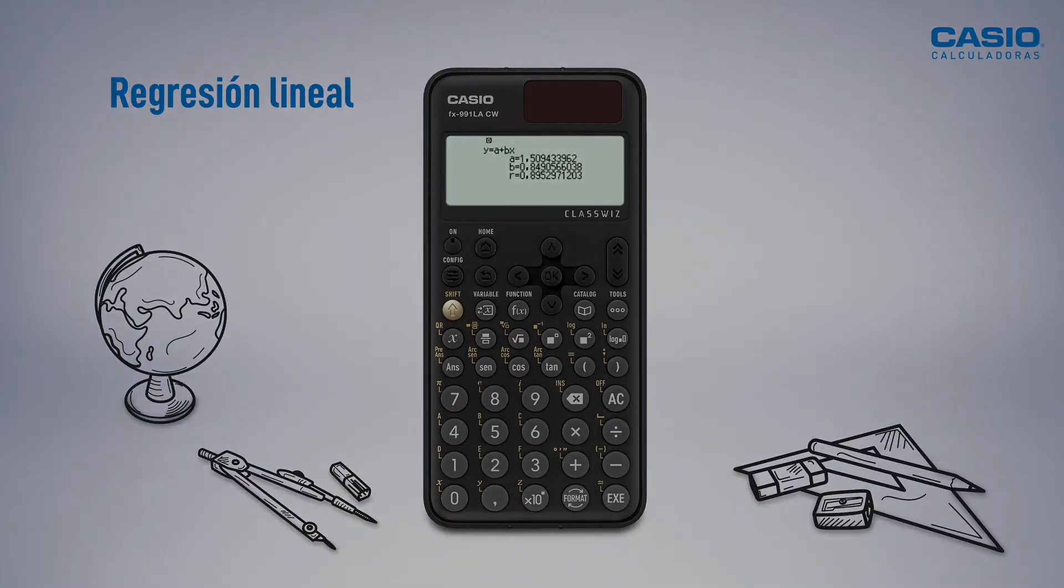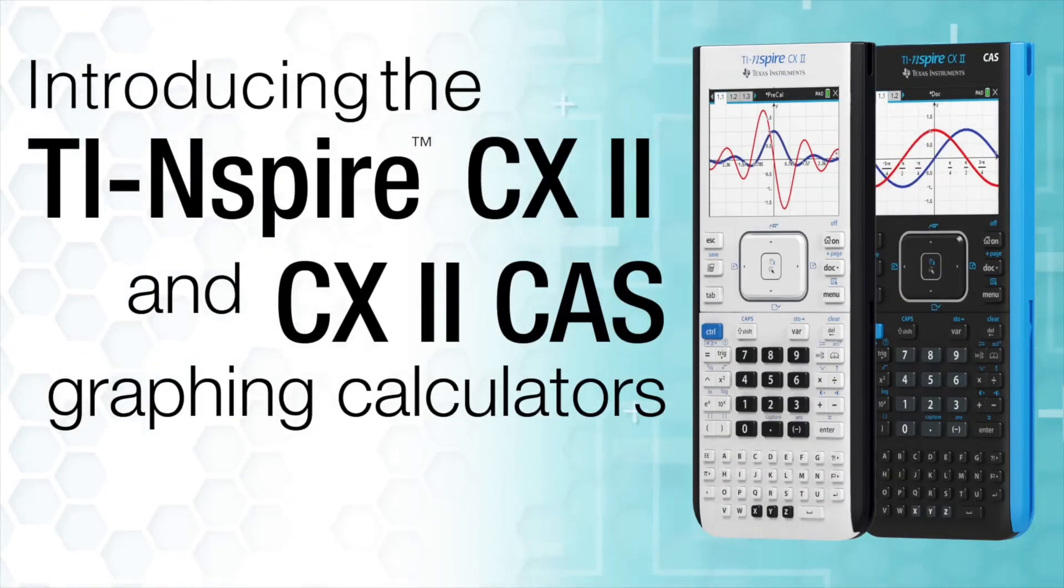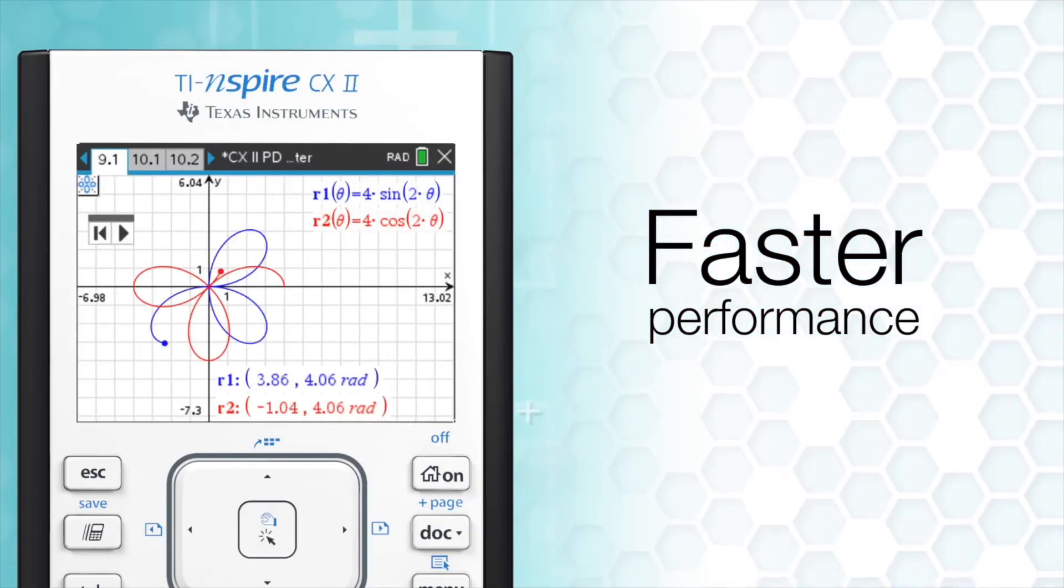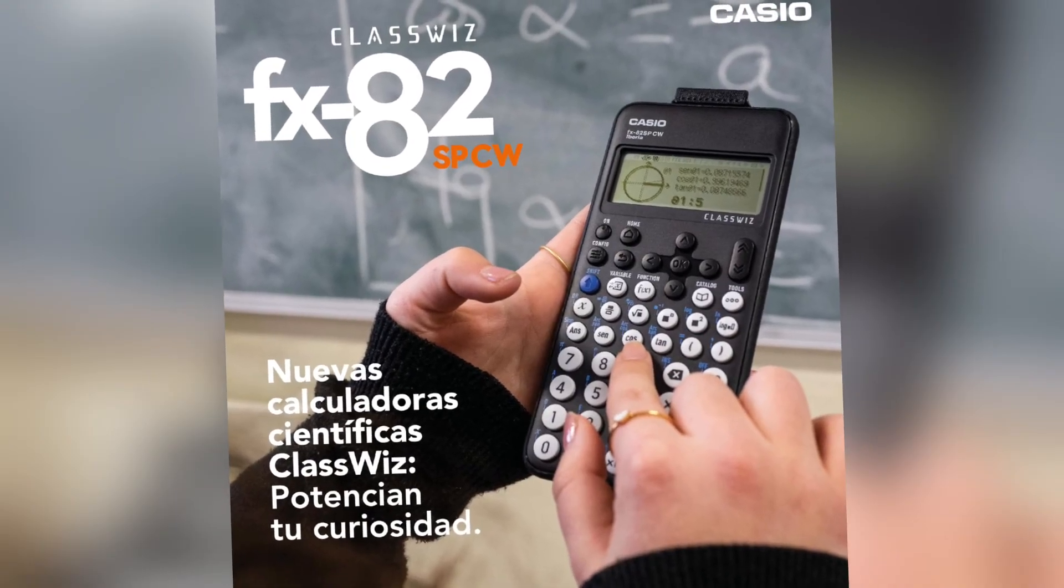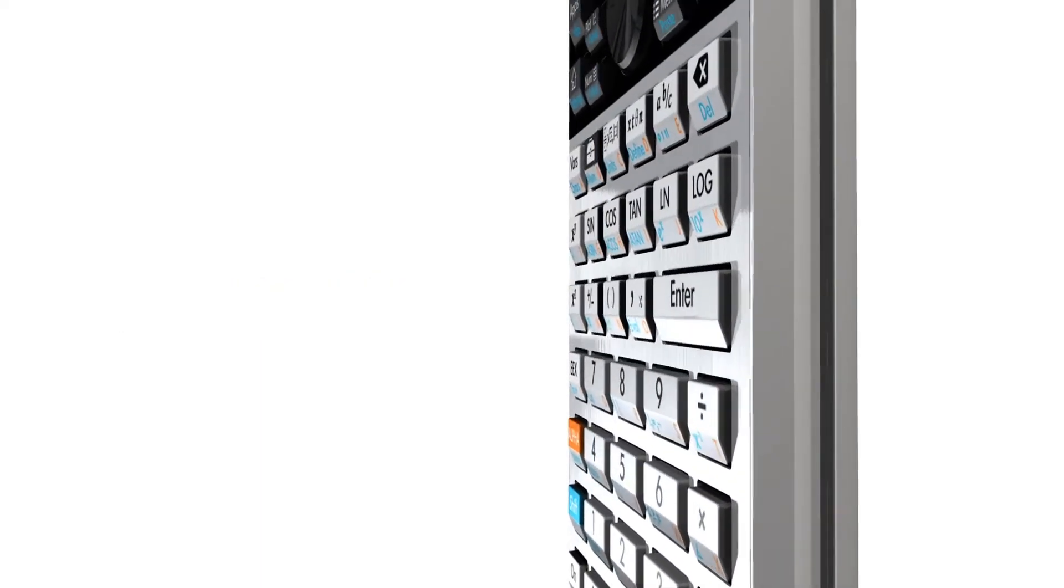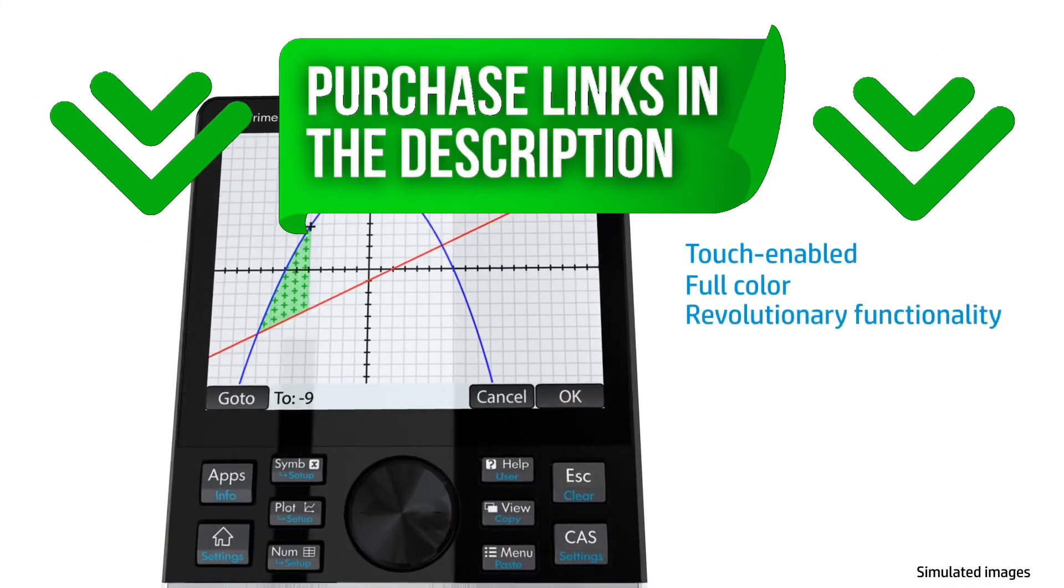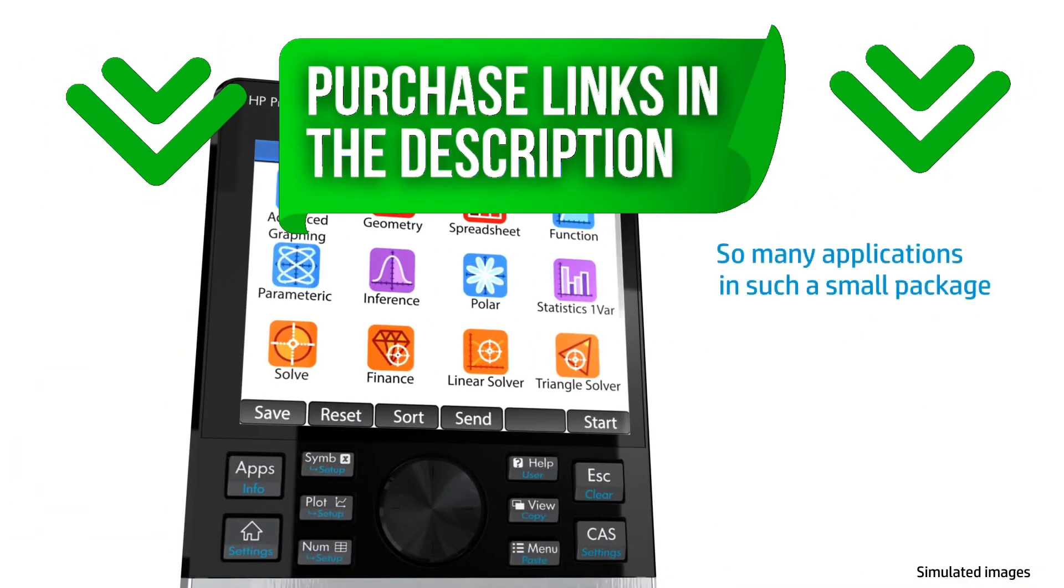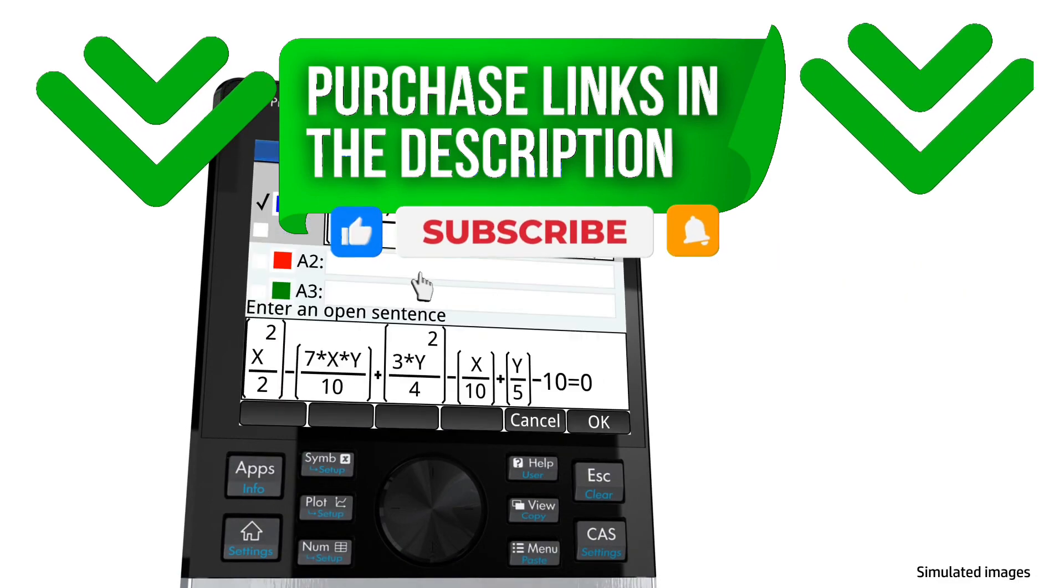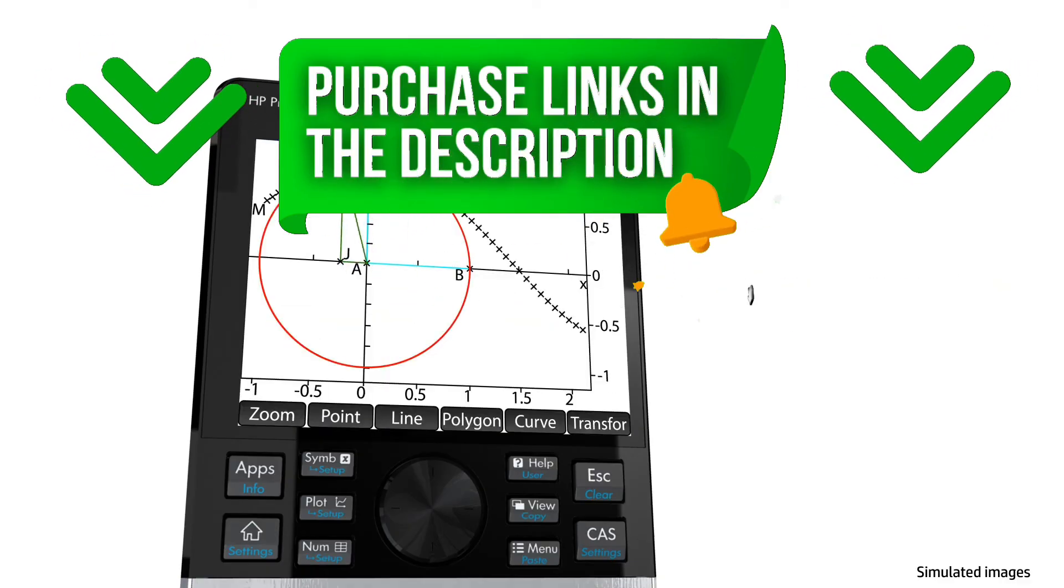To wrap it up, the best overall calculator for most engineering students and professionals would have to be the TI-Inspire CX2 CAS, thanks to its versatility, advanced features, and programming ability. If you're after the best budget-friendly option, the Casio FX-82 SPCW offers the essential tools at a fraction of the price. And if you're focused on a specific field of engineering, you now have the insight to choose the model that fits your exact needs. Don't forget to check out the links in the description to see the prices or make a purchase. Transform your engineering experience with the right calculator. See you in the next video.